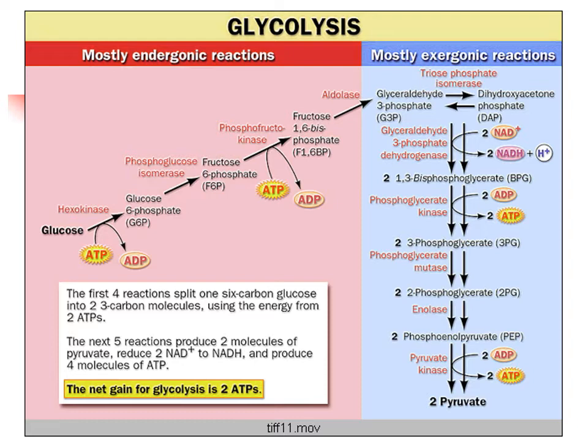Fructose-1,6-bisphosphate indicates that both terminal carbons of the molecule are phosphorylated. When it is split in the subsequent reaction into two 3-carbon molecules, each 3-carbon molecule will have one phosphate group. Aldolase catalyzes this reaction, resulting in glyceraldehyde-3-phosphate and dihydroxyacetone phosphate. These two molecules are in equilibrium and can be interconverted by triosephosphate isomerase.